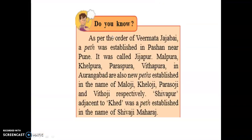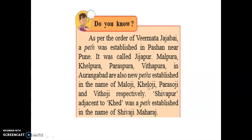Even rulers took great interest in ensuring that appropriate markets were set up. Veer Mata Jijabai, the mother of Chhatrapati Shivaji Maharaj, established a Pate in Pashan near Pune, and in her honor it was called Jijapur. Malpura, Khelpura, Paraspura, and Vitapura were some more Pates established in Aurangabad — Malpura in honor of Maloji, Khelpura in honor of Kheloji, Paraspura in honor of Parsoji, and Vitapura was named after Vithuji. Similarly, in Khel there was a Pate called Shivapur, and you guessed it — that was to honor Chhatrapati Shivaji Maharaj.